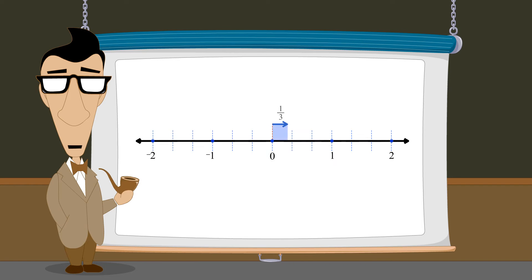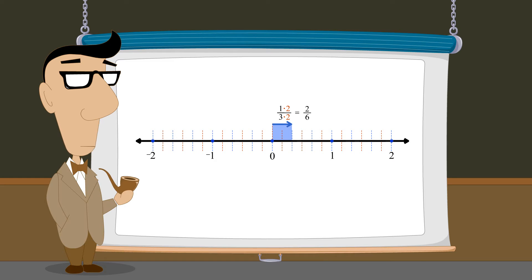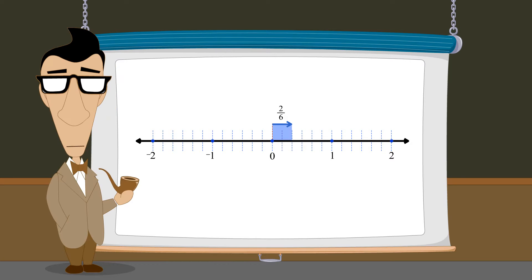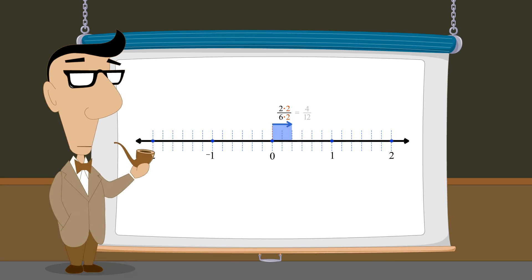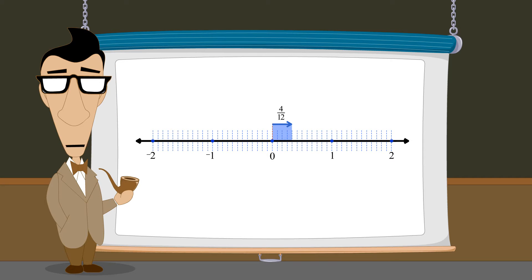For example, the fraction one-third can be written as two-sixths if we multiply the top and bottom by two. Or by multiplying the top and bottom by two again, it can be written as four-twelfths. Of course, doing so will create an equivalent fraction with a larger numerator and denominator.